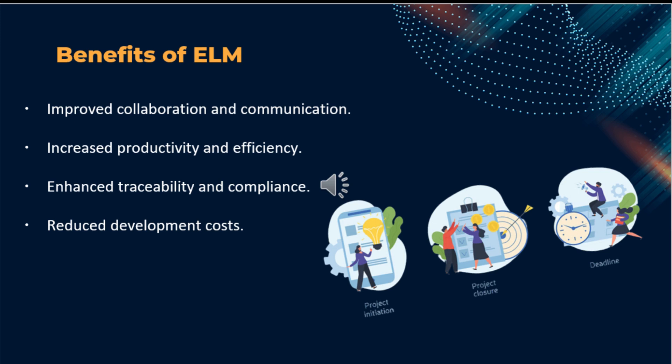Implementing IBM ELM brings several benefits to organizations. IBM ELM promotes effective collaboration among teams by breaking down silos and enabling seamless communication, which results in better alignment and helps reduce rework. With automated workflows, streamlined processes, and a centralized platform, ELM eliminates manual tasks, reduces administrative overhead, and allows teams to focus on value-added activities, ultimately increasing productivity. ELM also provides end-to-end traceability by connecting artifacts across the development lifecycle, ensuring compliance with industry regulations and standards by facilitating audits and mitigating risk.